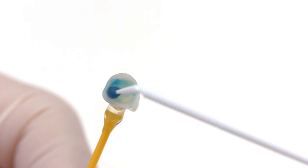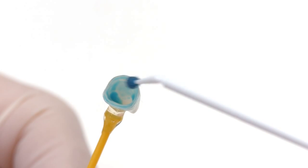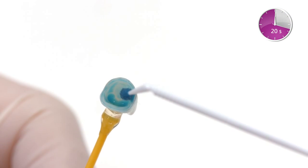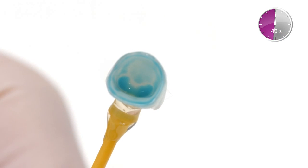Apply Monobond Etch & Prime bonding agent to the bonding surface with a micro brush and rub it onto the surface for 20 seconds. Allow it to react for 40 seconds.